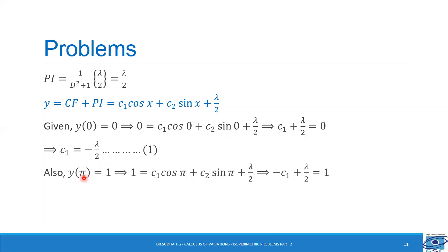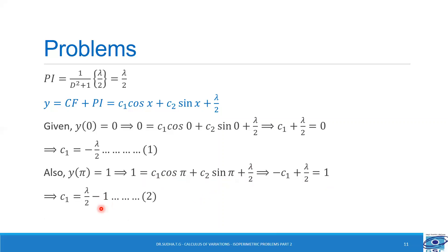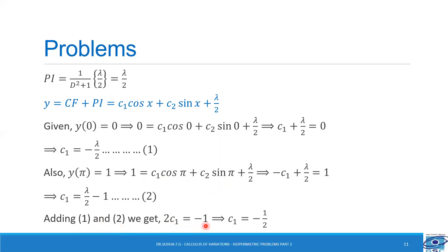Using the second condition y(pi) equal to 1: putting x equal to pi gives c1 cos pi plus c2 sin pi plus lambda/2 equal to 1. Since sin pi is 0 and cos pi is minus 1, we get minus c1 plus lambda/2 equal to 1, so c1 equal to lambda/2 minus 1 — call this expression 2. Adding expressions 1 and 2 gives 2c1 equal to minus 1, therefore c1 equal to minus half.